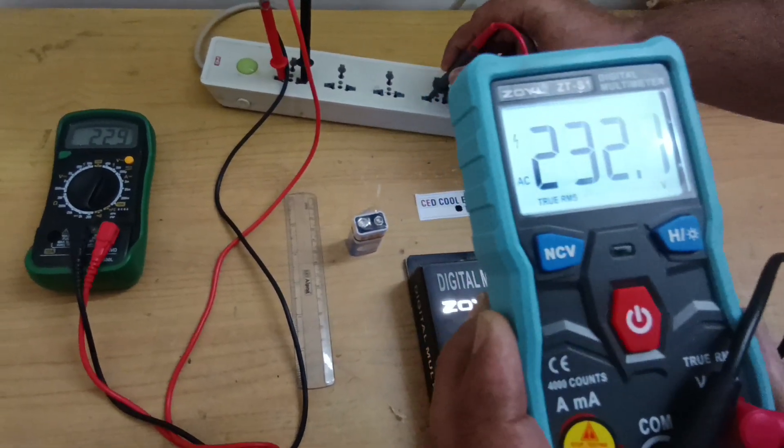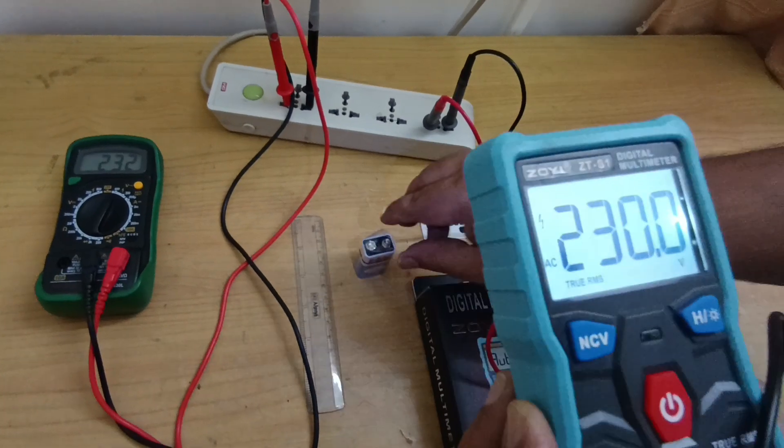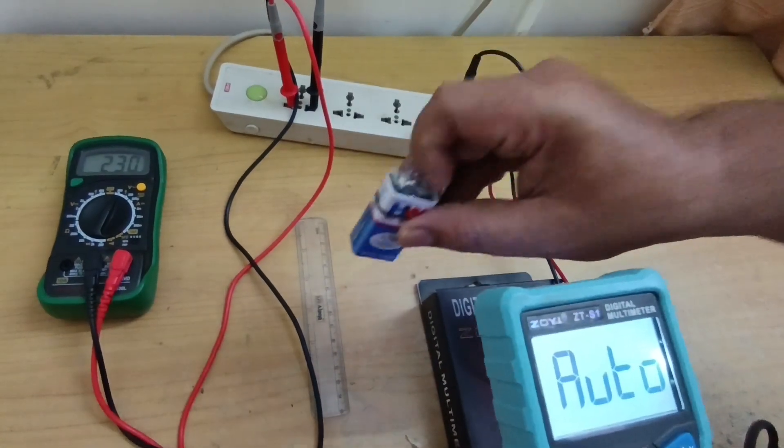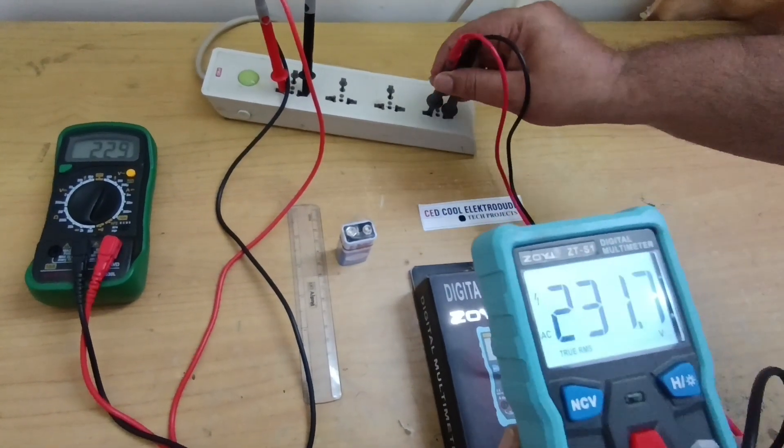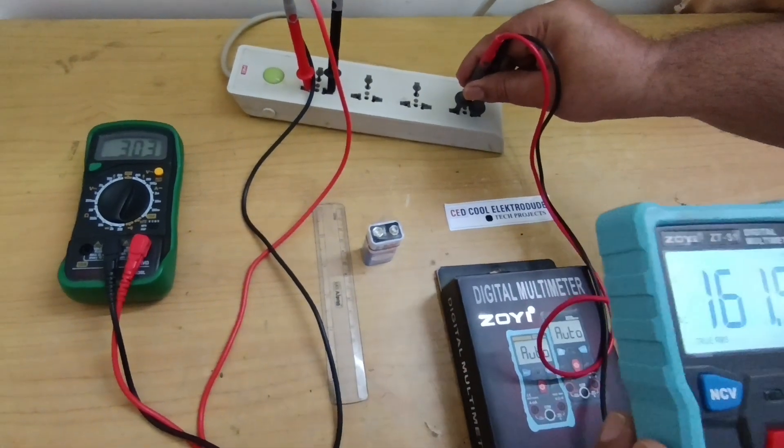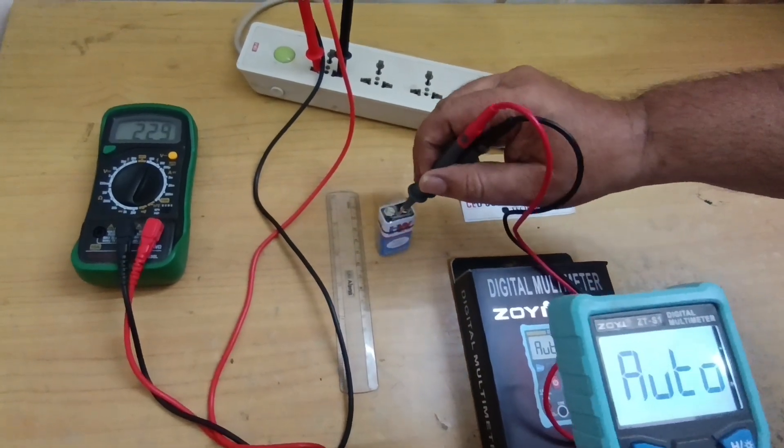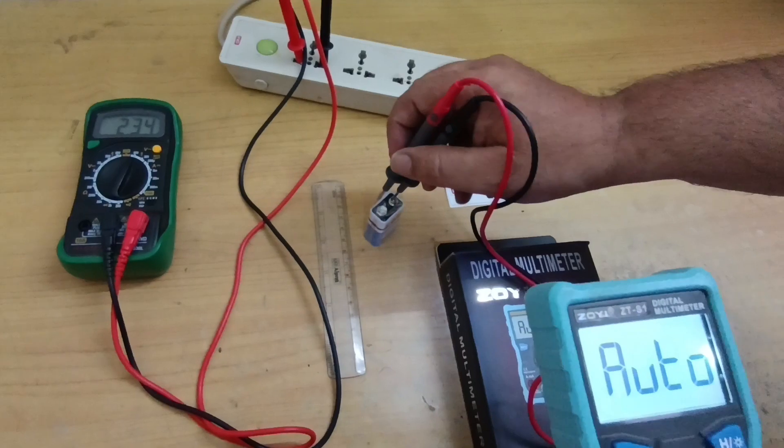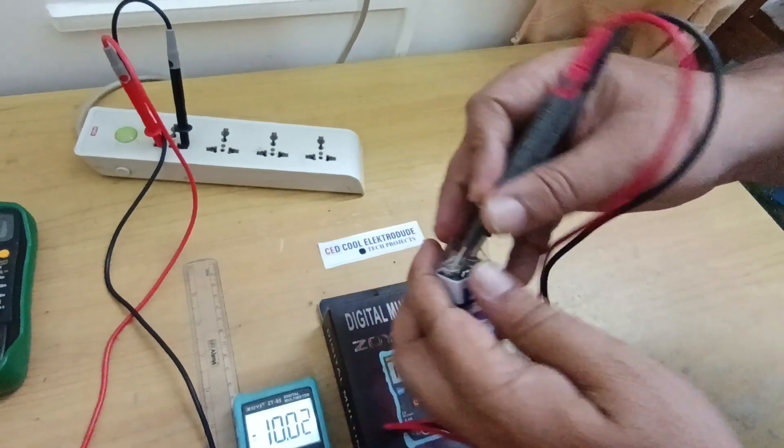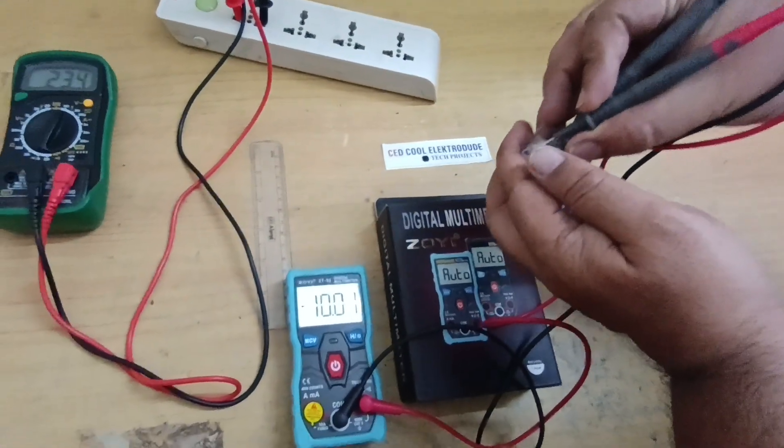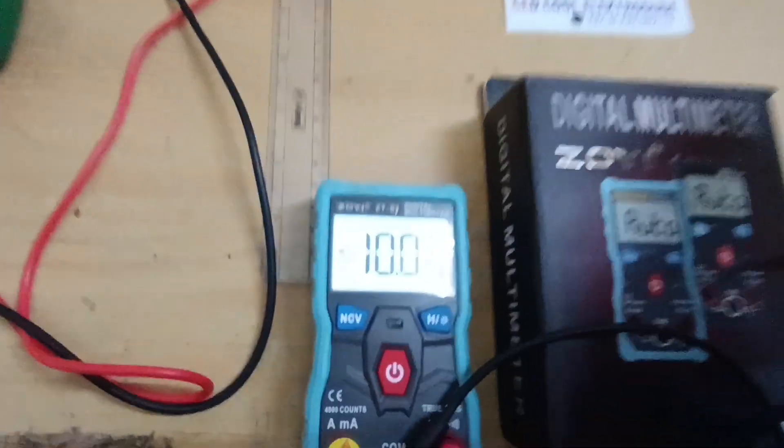Now I'm in the AC source. I have a 9-volt battery here, and if I suddenly connect to the 9-volt battery, I don't have to change any switch or anything. I just take the probes and connect it here, and automatically it shows 10.2 volts. You can see it's displaying DC.